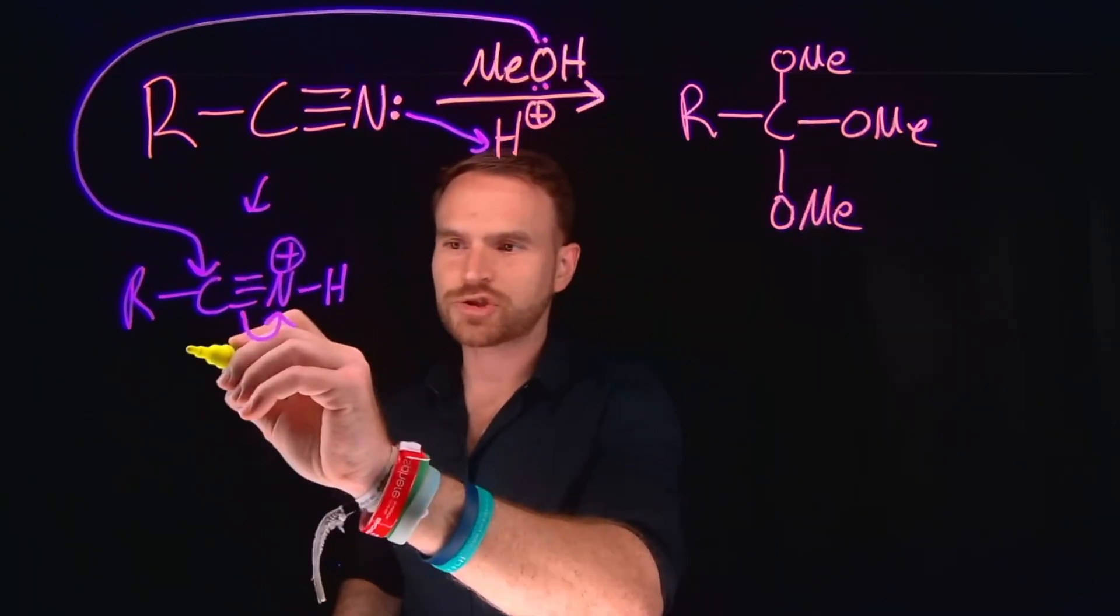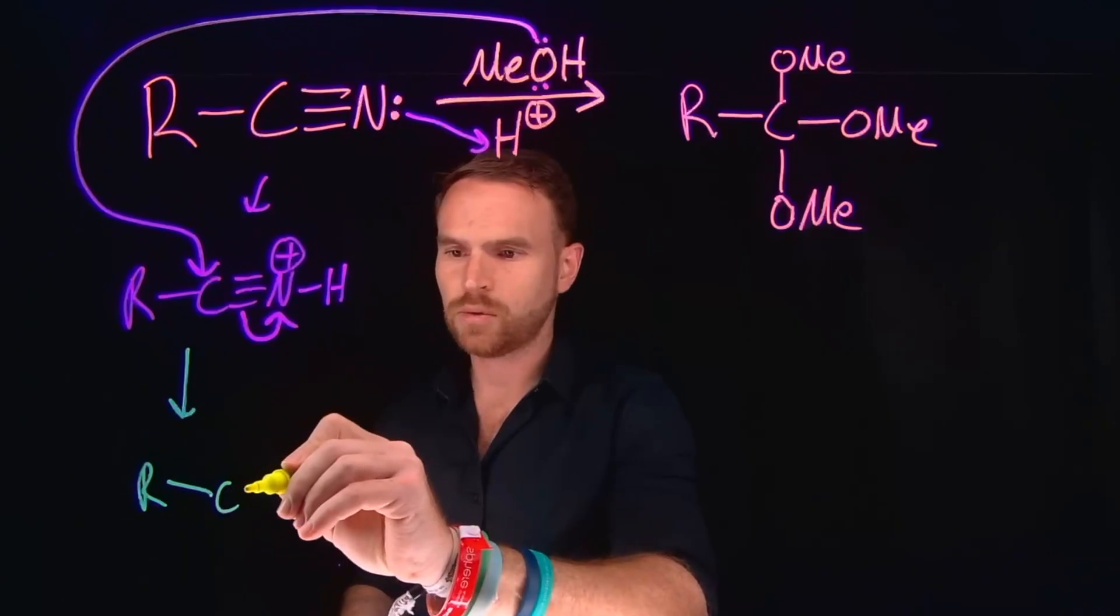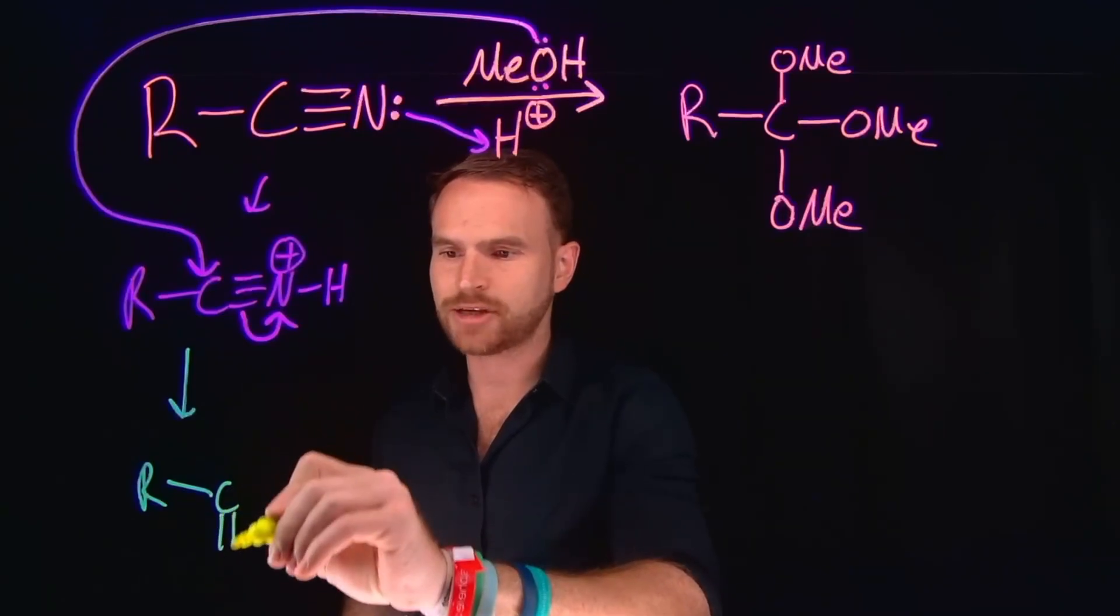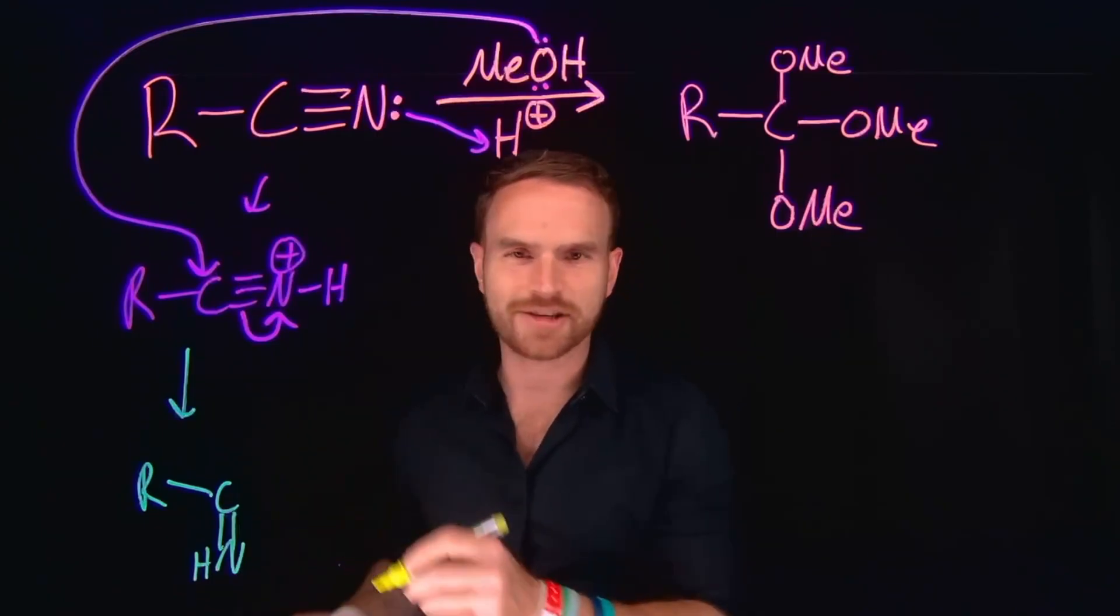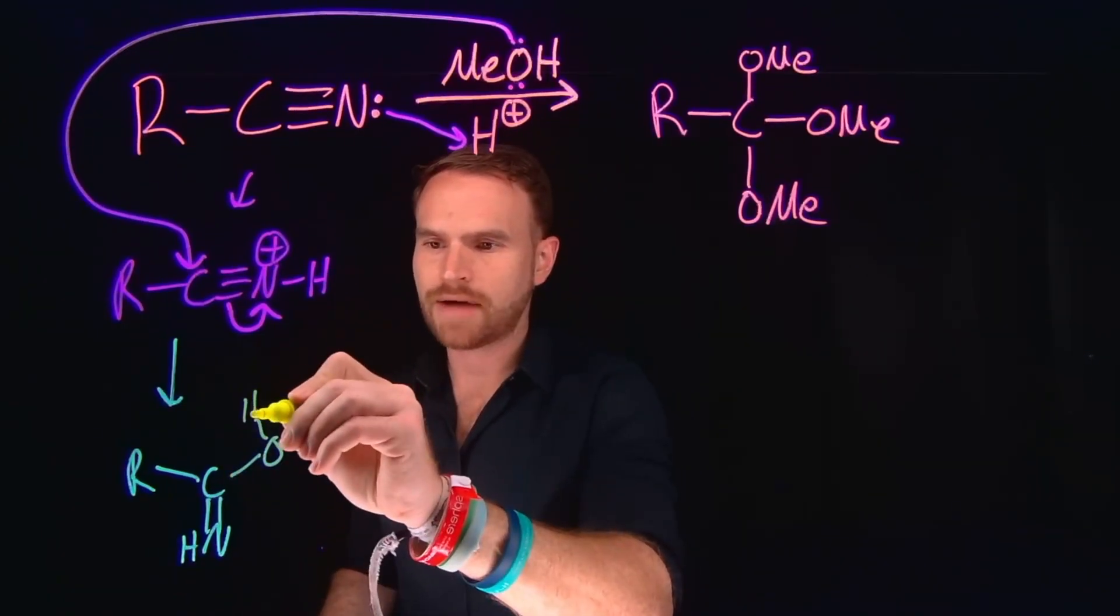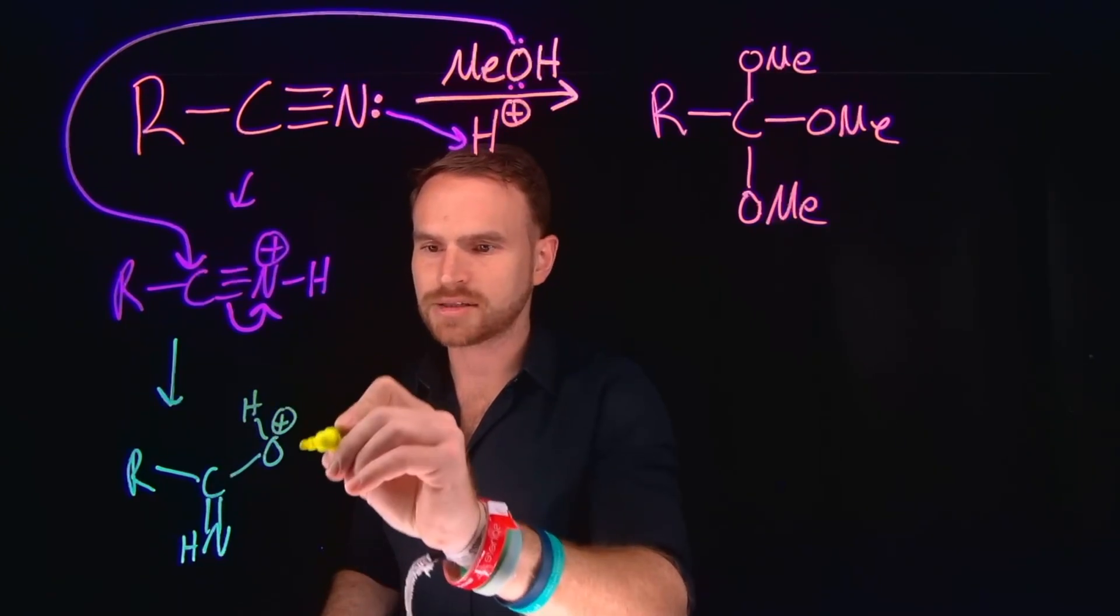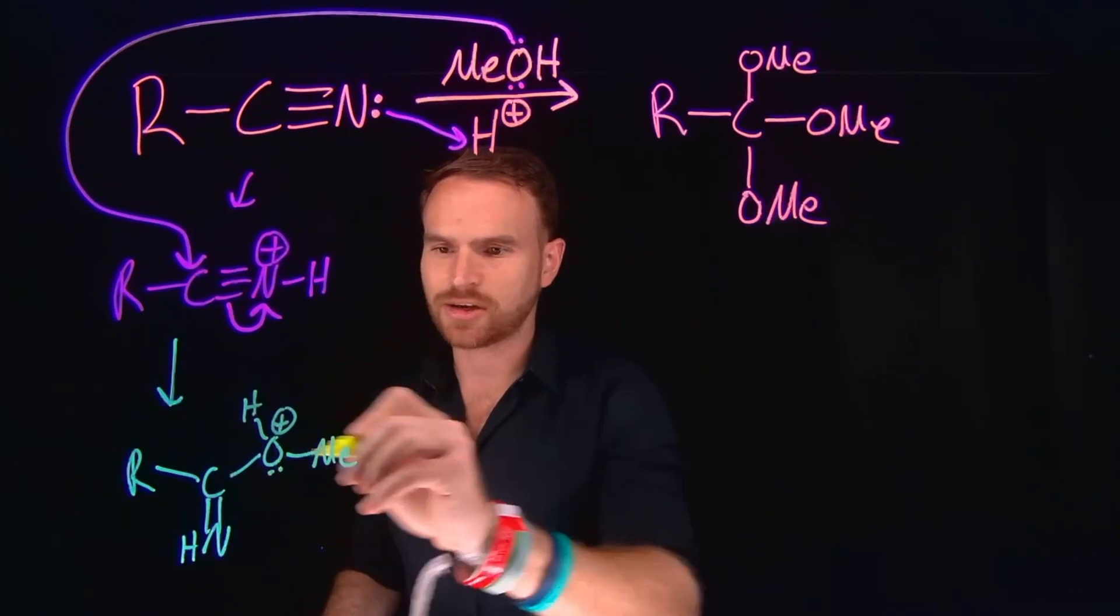So the product of this transformation is going to contain our R group attached to our carbon, which now has a carbon-to-nitrogen double bond and a hydrogen. We call this an imine, typically when you see a carbon-to-nitrogen double bond. And the rest of that alcohol is attached here, where now we have a positively charged oxygen, because it's going to contain three bonds to oxygen and just a single lone pair.